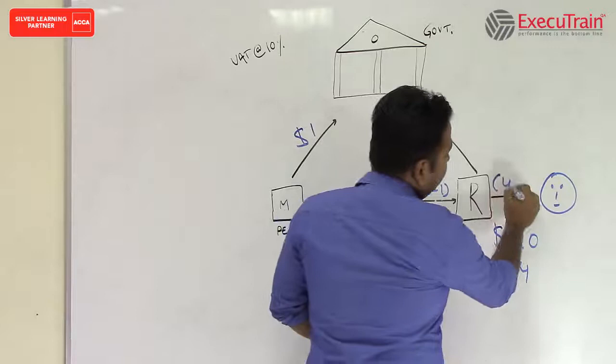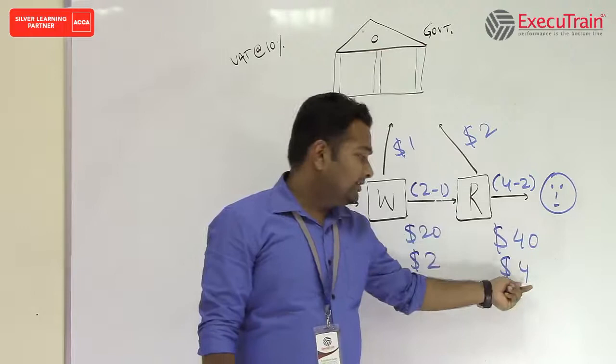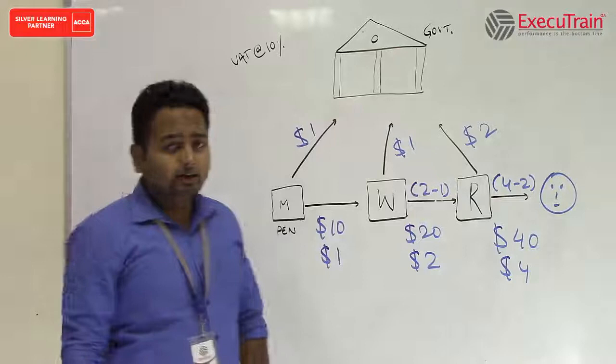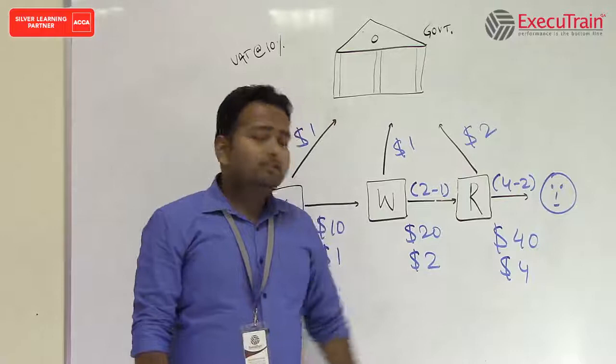If you see the end price of the product is $40, and the VAT should be 10% of $40, which is $4. So effectively the government should get $4 at the end of the sale of the product. And if you add these stages also, you see $1 plus $1 plus $2 - the government gets $4 as VAT. So this is a small concept I have discussed regarding VAT.